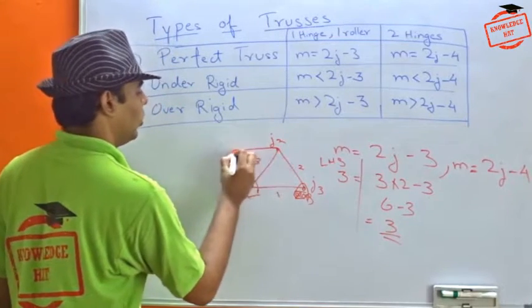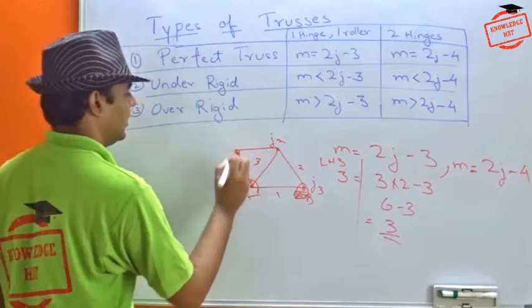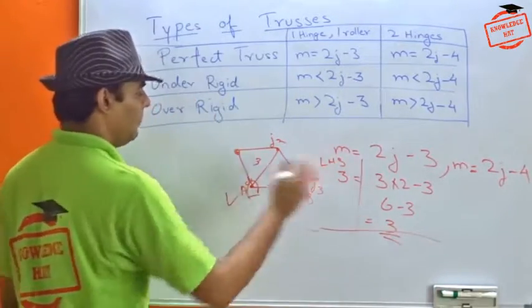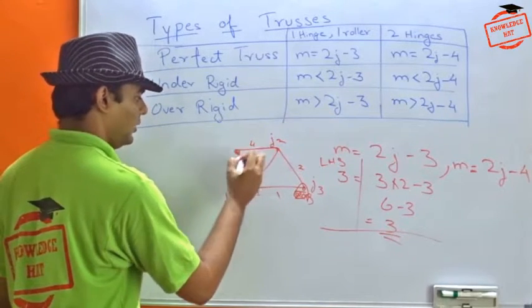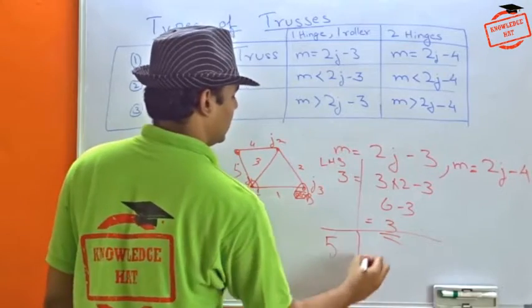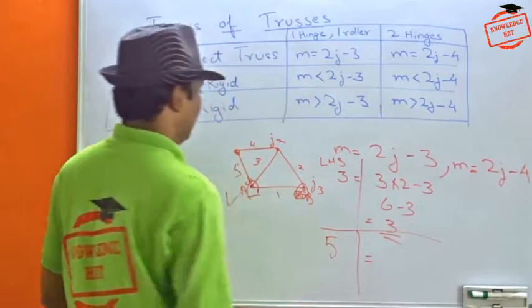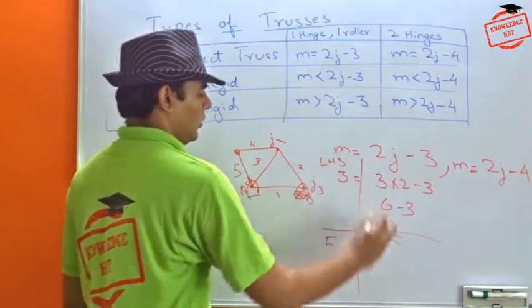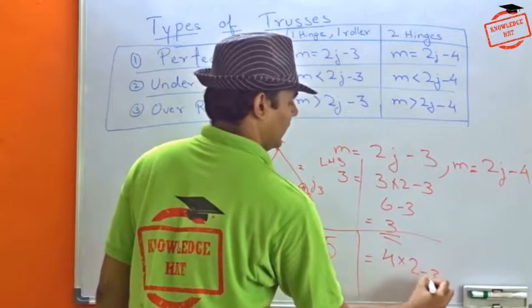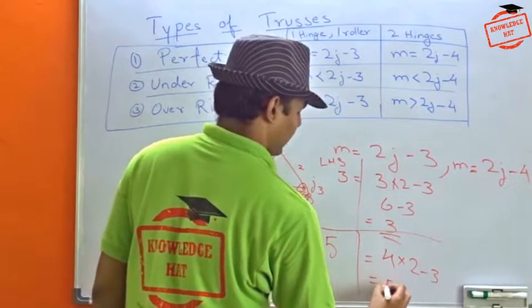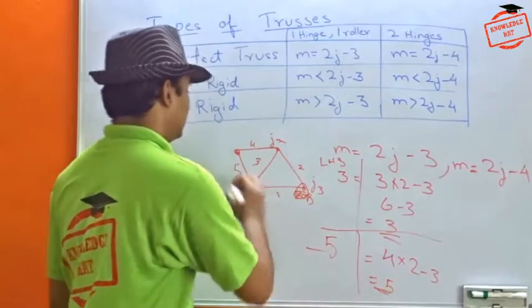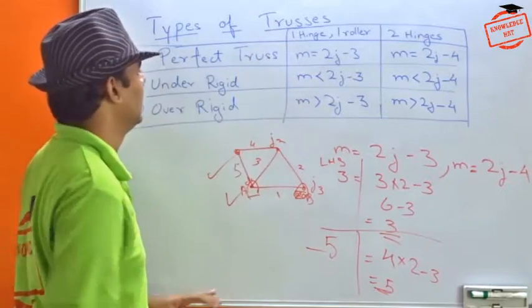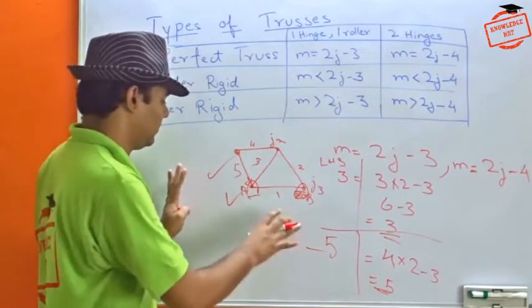Suppose we add another joint and two members to it. Now we'll again apply the same formula. Now how many members do we have? We had three, we have added fourth and fifth. So we have five members here. Now we'll look at the number of joints that we have. We have one, two, three, and four. So we apply the formula: four into two minus three. What is it? Eight minus three, which is equal to five. So again, our system is perfectly rigid. And if the system is perfectly rigid, it is more stable, it is likely to be stable.